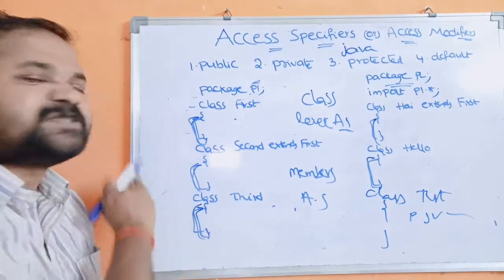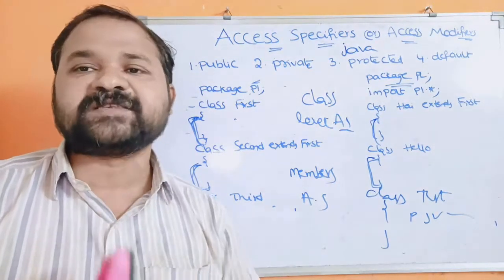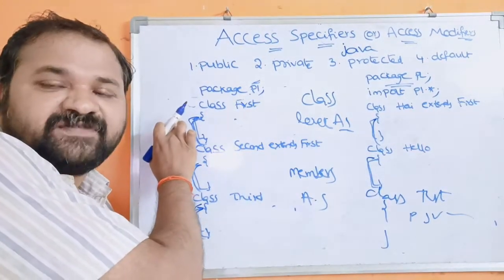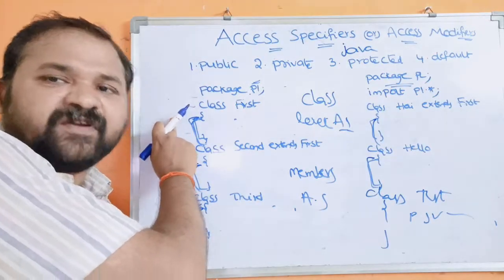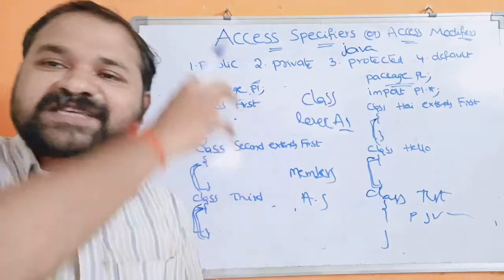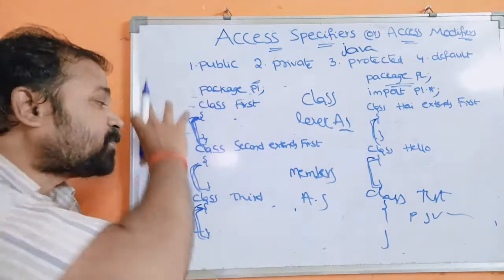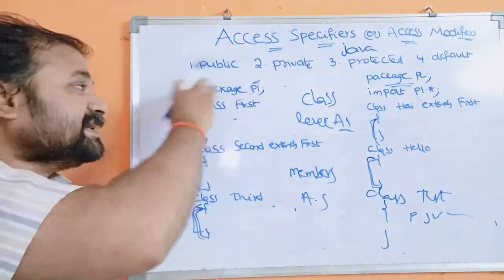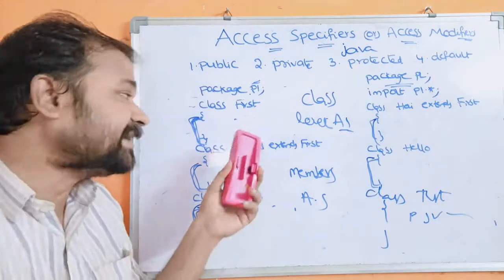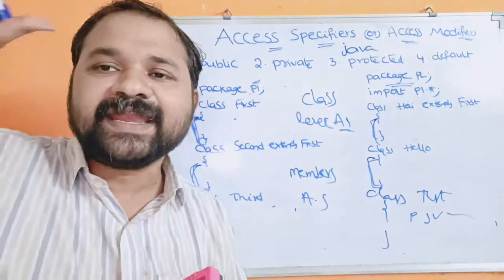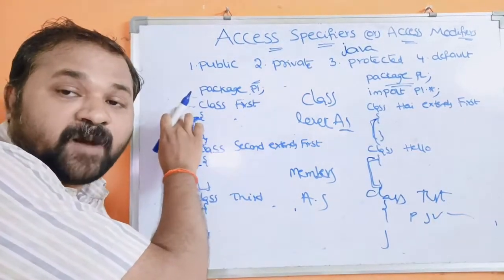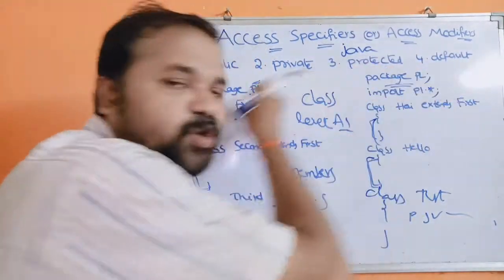If we don't specify any access specifier, then by default it will become 'default'. There is no need to explicitly write the keyword 'default'. If a class is declared as default, it is accessible only within this package — from outside this package it is not possible to access it. So when declaring classes in packages, we must specify the access specifier as public; otherwise accessing the class from outside is not possible.